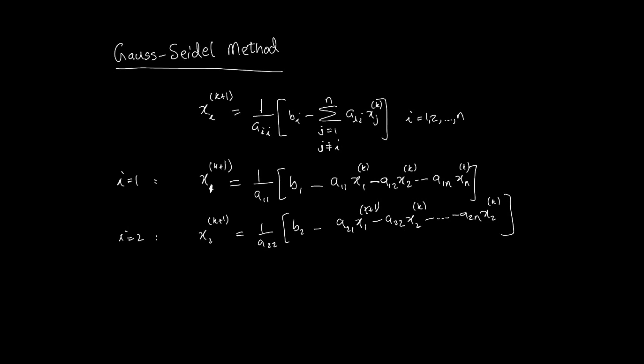So if I were to say here k plus 1, I actually have already calculated it. So why not use the updated value of x1 k plus 1? The remaining x2k minus dot dot dot minus a2n x2k, I don't have them, so I'll just use this. In the same way, when I go to the next one, let me show you.